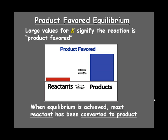When equilibrium is achieved then, most of the reactant has been converted to product. So we say this is a product-favored reaction.